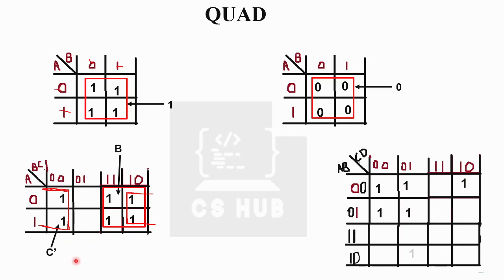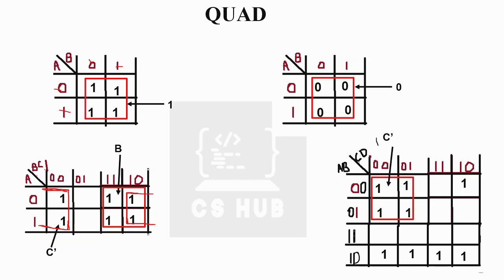In the four-variable Kmap, consider our markings. One quad is easily identified. Its variable values: A=0 (A-bar) and in the column, C values are 0 and 1 (cancelled), giving A-bar·C-bar. For another quad where all four ones come under a single row: the row is A·B-bar, and all columns fall under one group so CD values cancel — result is A·B-bar.